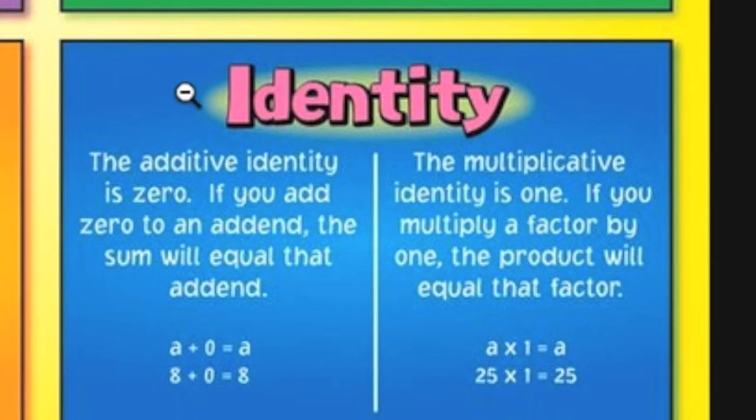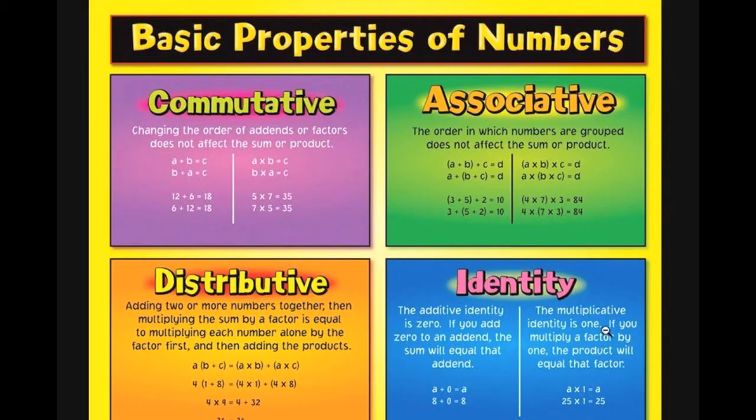And the last one that was on that sheet was the identities. Now there's two big ones. The additive identity says that whenever you add zero to a quantity, you get the same number. So anything plus zero is that same number. And the multiplicative identity, well, that's even better. It says anytime you take a number and multiply it by one, you get that same number.